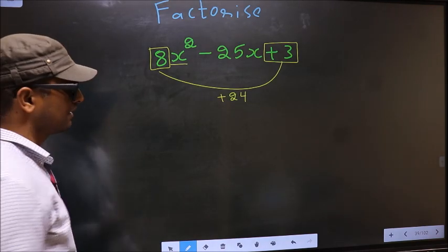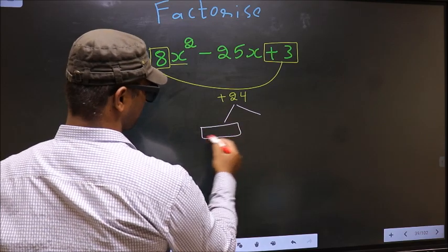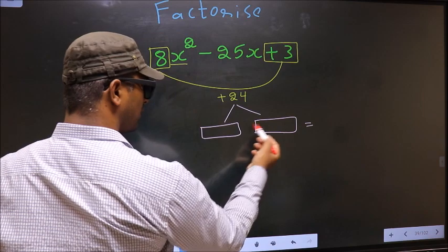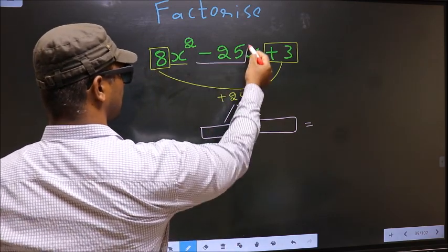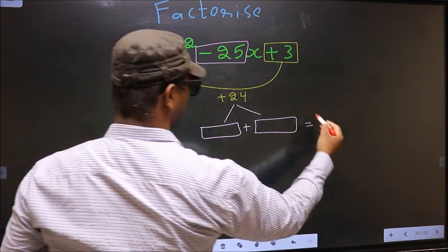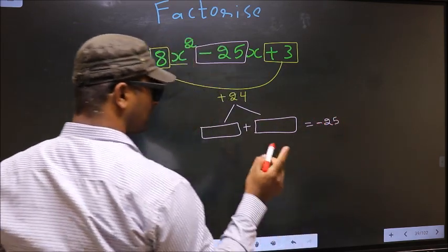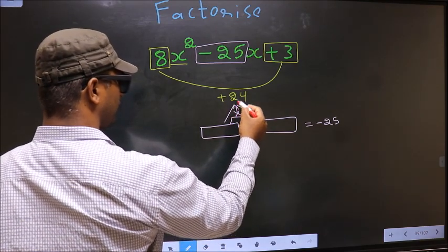Next, now you should look out for 2 numbers such that when you add these 2 numbers, you should get the middle coefficient that is minus 25, and also when you multiply them, you should get plus 24.